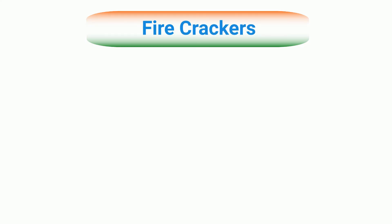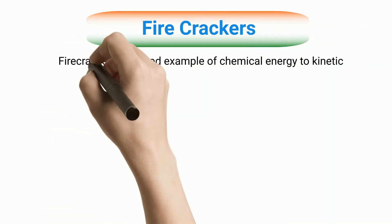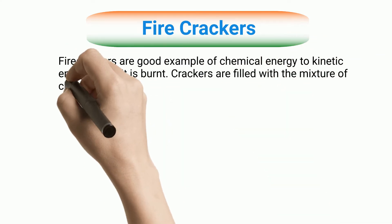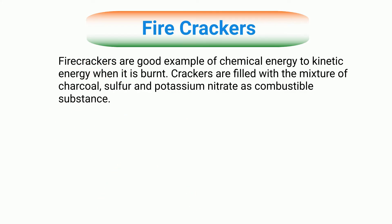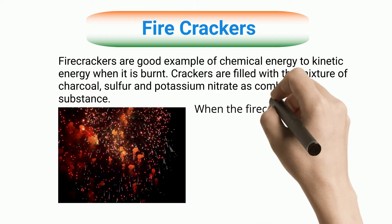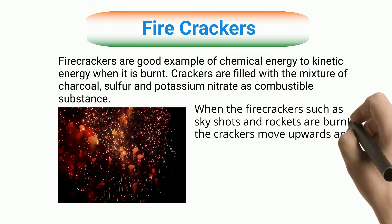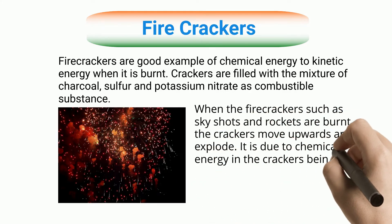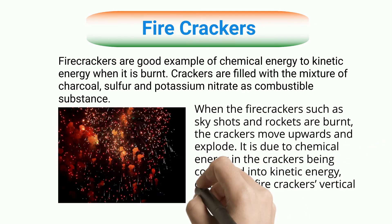Firecrackers. Firecrackers are a good example of chemical energy to kinetic energy conversion when burnt. Crackers are filled with a mixture of charcoal, sulfur, and potassium nitrate as combustible substances. When firecrackers such as sky shots and rockets are burnt, the crackers move upwards and explode, due to chemical energy in the crackers being converted into kinetic energy.